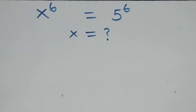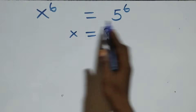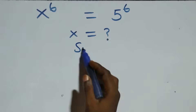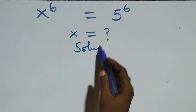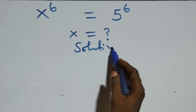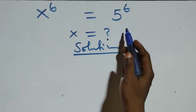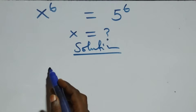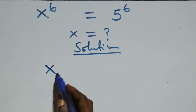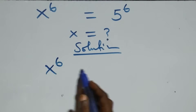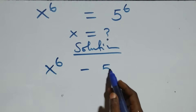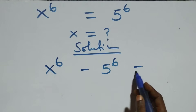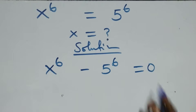Hello, you are welcome. How to solve this nice exponential equation. From what we have here, we can take 5 raised to power 6 to the left hand side and we have x raised to power 6 minus 5 raised to power 6 equals to 0.